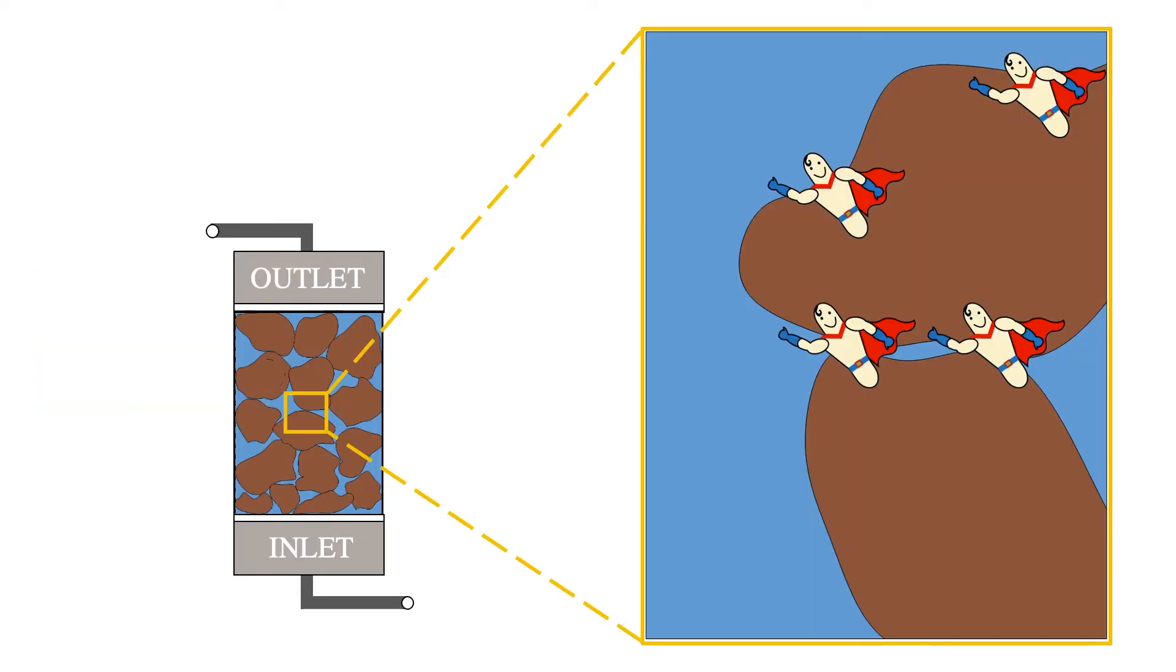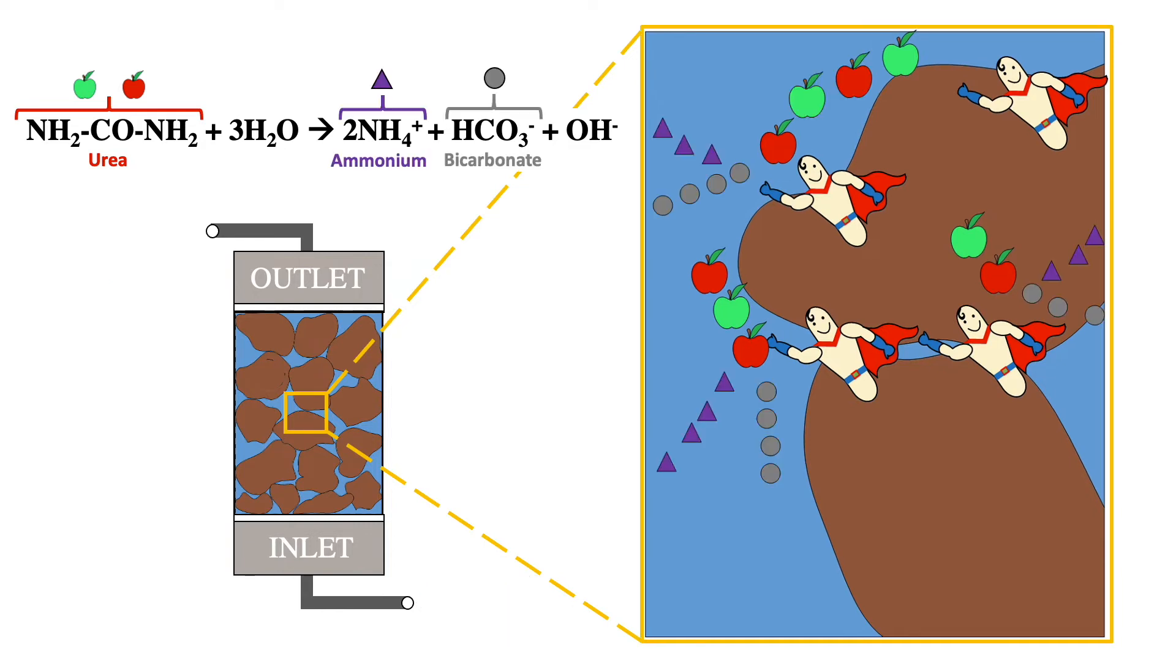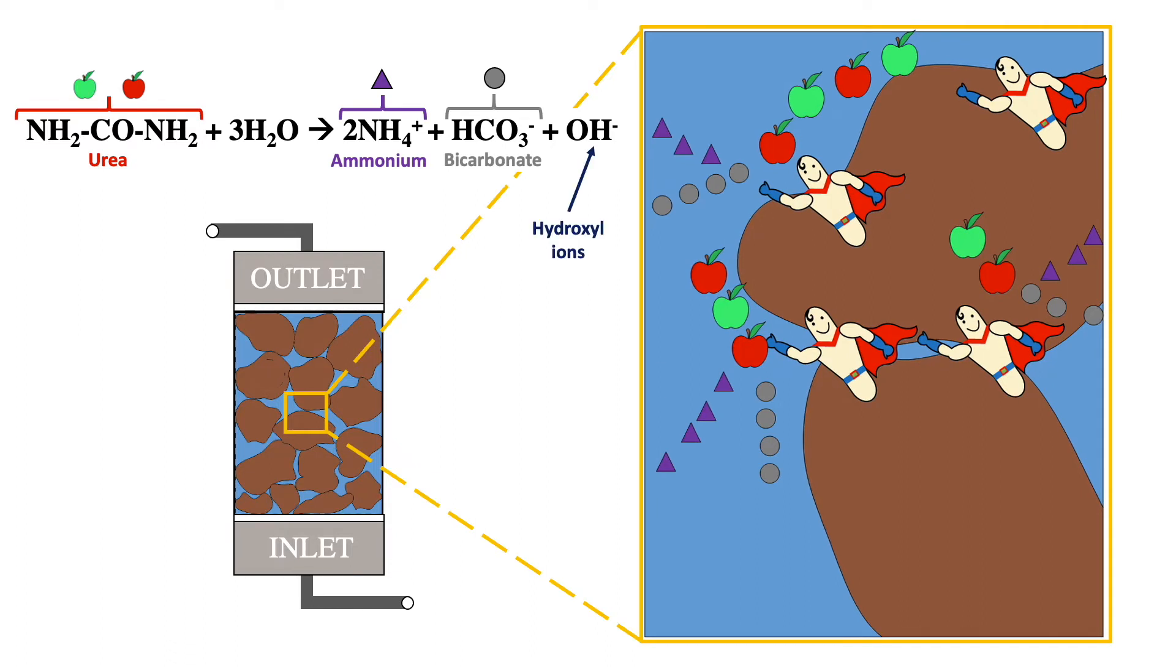When urea is introduced to the soil bacteria system, the bacteria will consume the urea as a nutrient source and produce several byproducts as a result of urea hydrolysis. These byproducts include ammonium and carbonate. This reaction creates an alkaline environment.